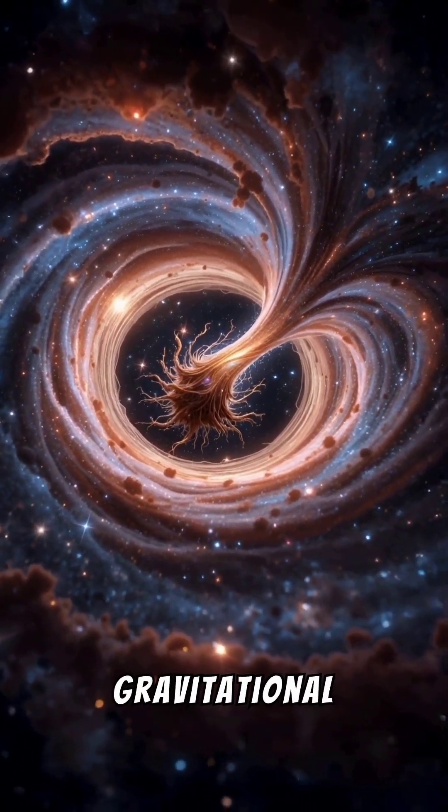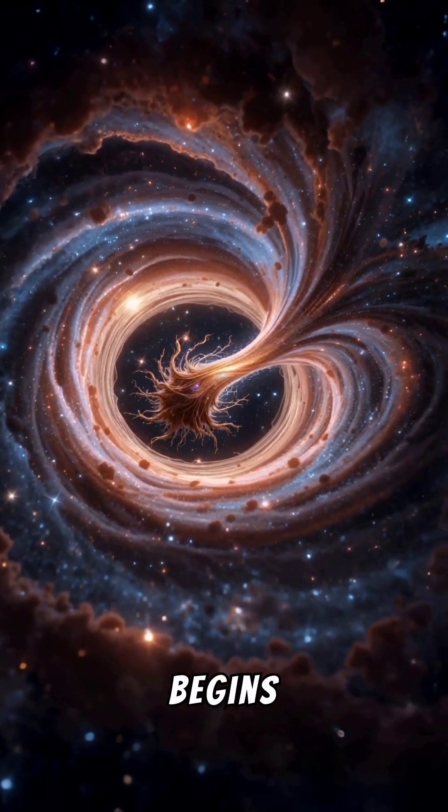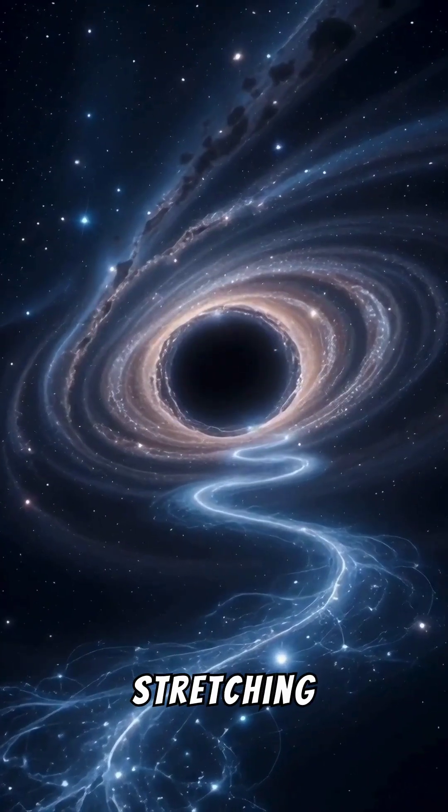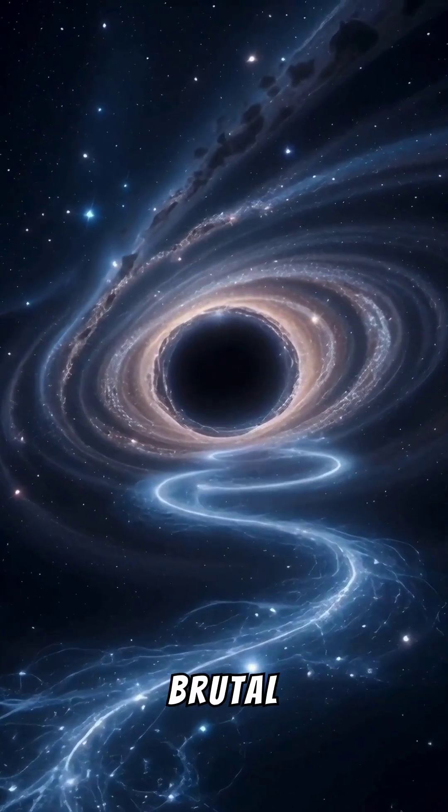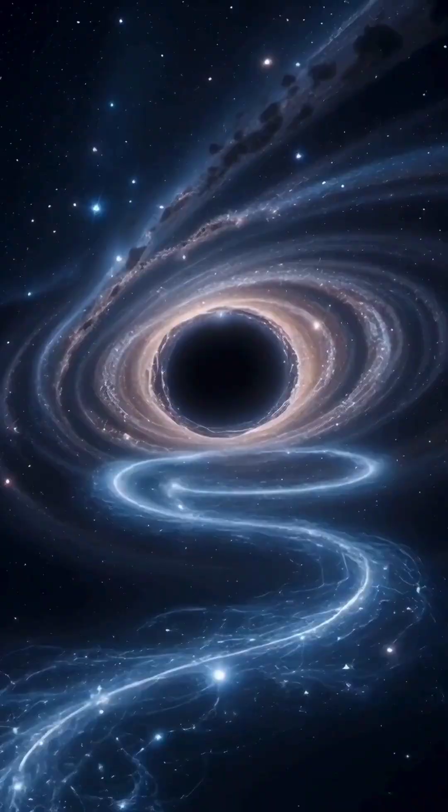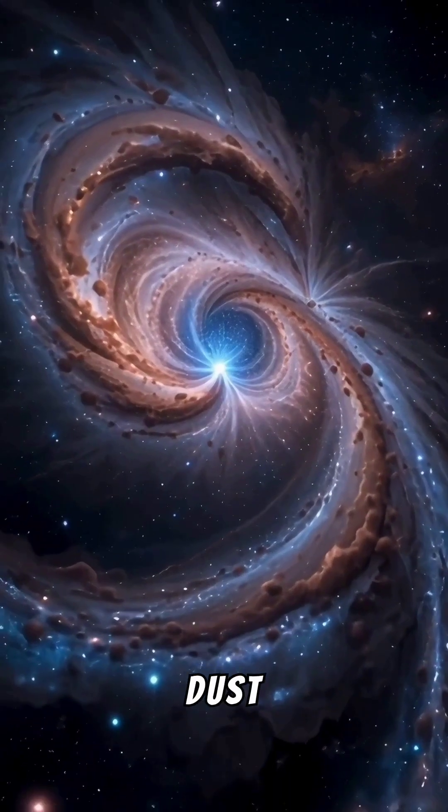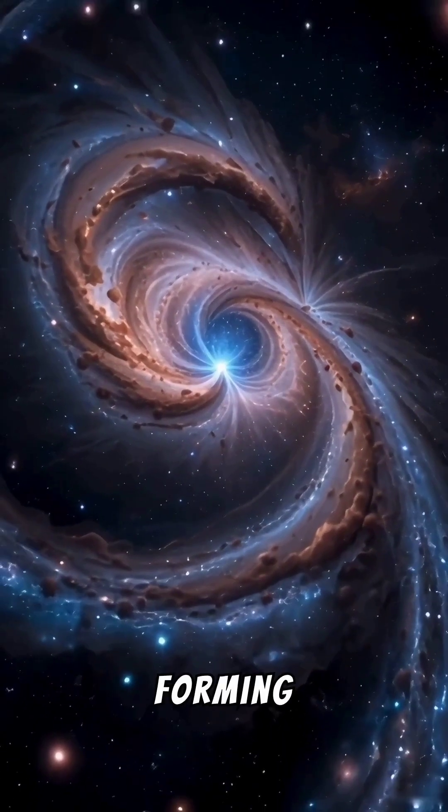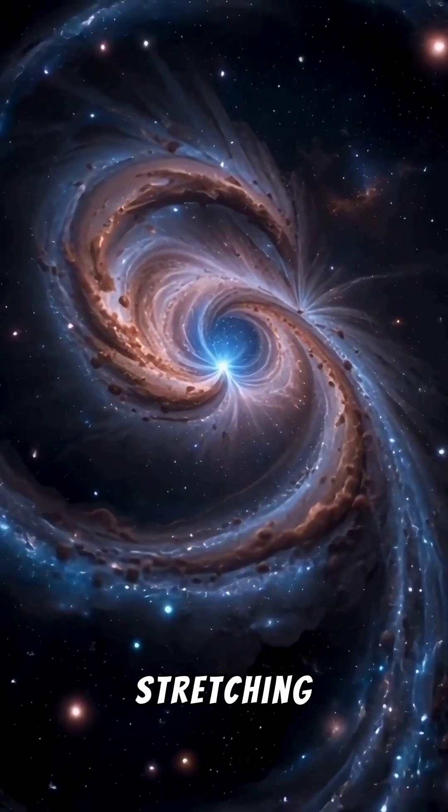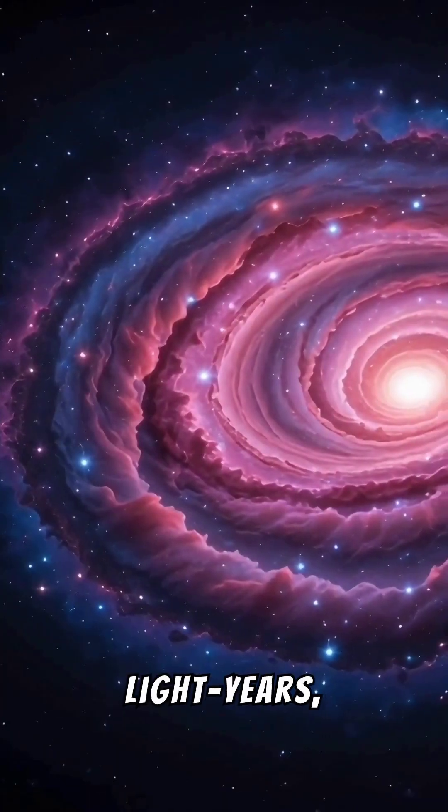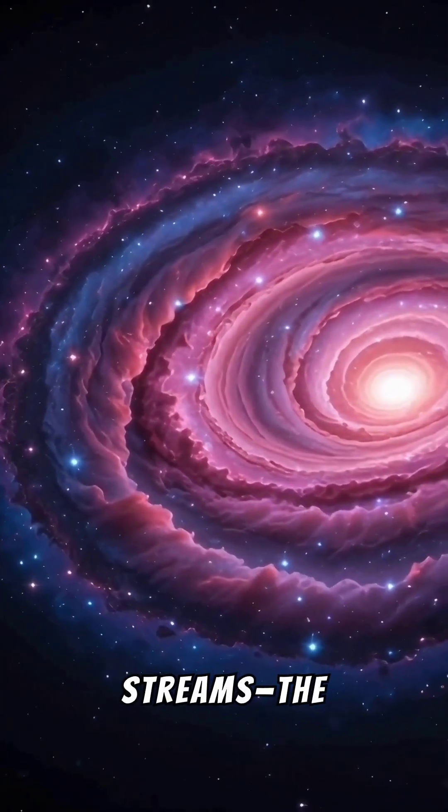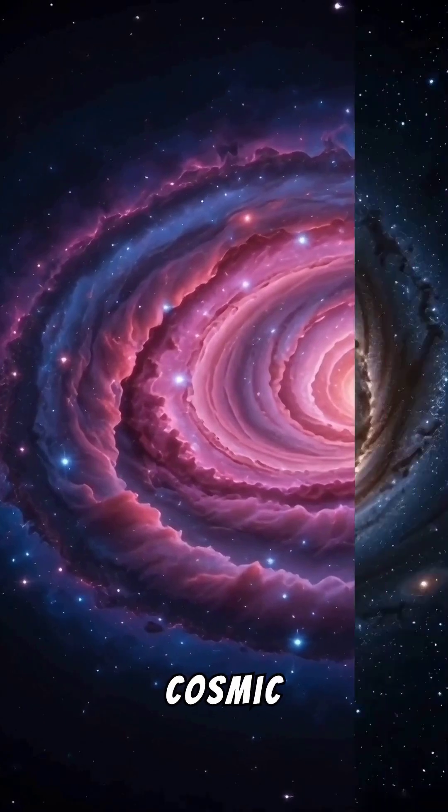The immense gravitational pull of the larger galaxy begins to deform the smaller one, stretching and tearing it apart in a brutal process. Its stars, gas, and dust are slowly stripped away, forming long tails of stellar material stretching for hundreds of thousands of light-years, known as tidal streams, the visible scars of this cosmic battle.